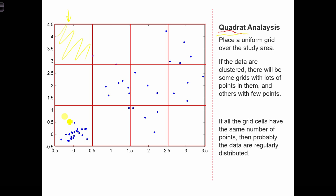So for example, here we have a lot of points, and here we have not a lot of points at all. And in some of these cells, we just have kind of an average number of points. So probably we can use this quadrat analysis to determine that this data are clustered.